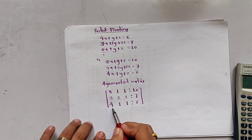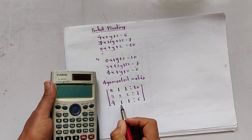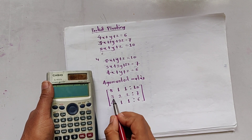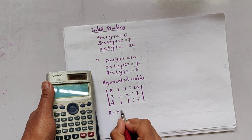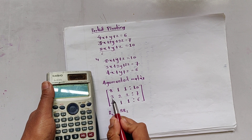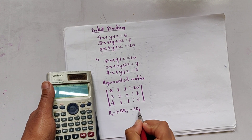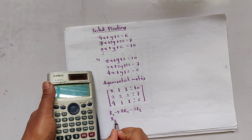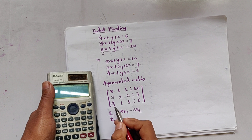We need to make the entries 3 and 4 in the first column equal to zero. For making the element 3 into zero, the LCM of 3 and 8 is 24, so we multiply R2 by 8. So R2 becomes 8×R2 minus 3×R1. Then for R3, the LCM of 4 and 8 is 8, so we multiply R3 by 2 minus R1.